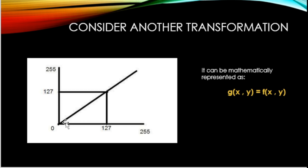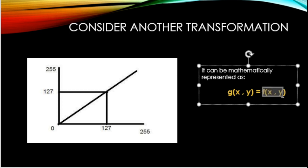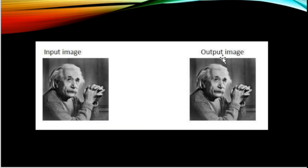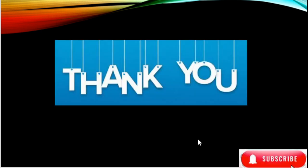Here is another transformation. In this graph we can see a straight line where the input image value and the output image value are the same, meaning the input and output functions are equal. Mathematically, g(x,y) = f(x,y), meaning the input function equals the output function. The input image is exactly the same as the output image. In the next video we will discuss the types of transformations in digital image processing.